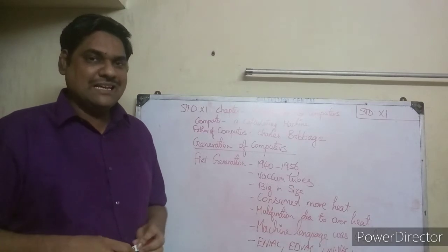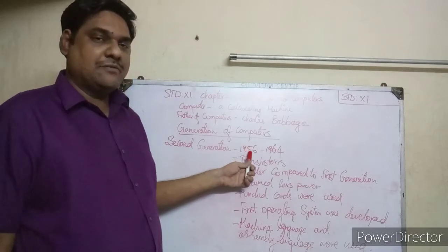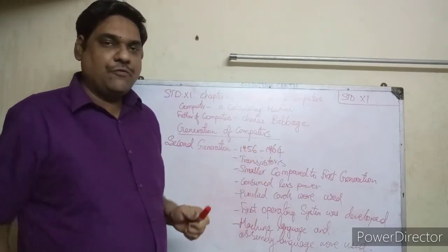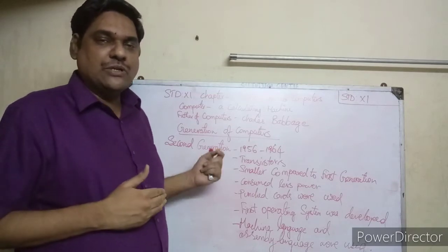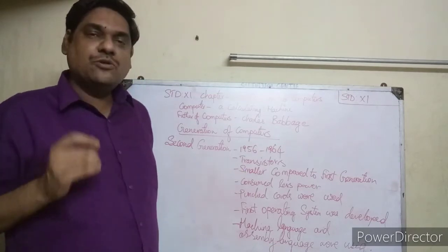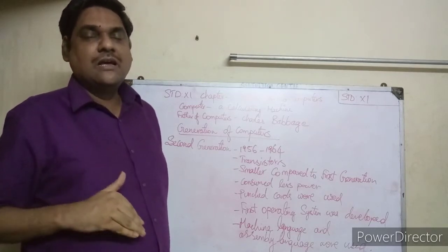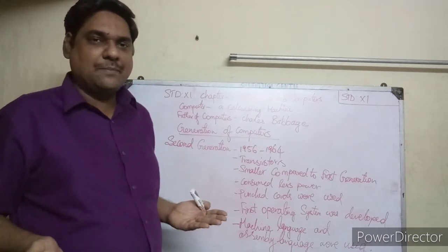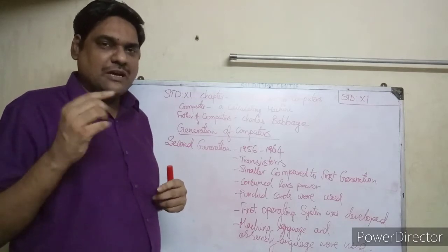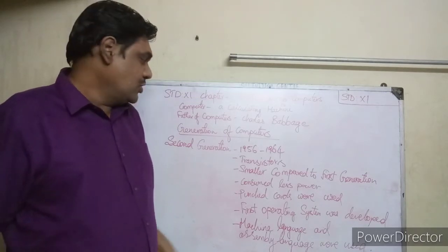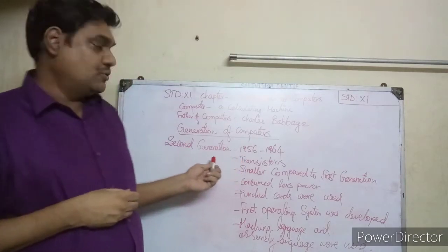Now let us see the second generation computers. The time period is 1956 to 1964. The main component of second generation computers is transistors. In the first generation, vacuum tubes were used; in the second generation, transistors replaced vacuum tubes. Transistors are smaller than vacuum tubes.